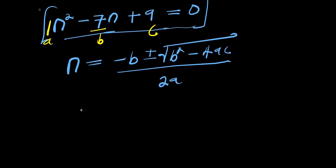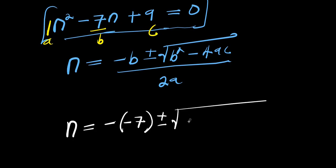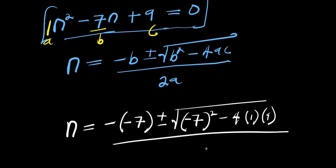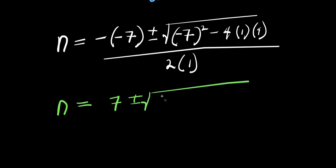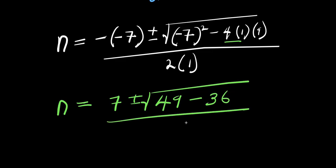We are going to insert these values into the formula. We have n equals negative times negative 7, plus or minus square root of negative 7 squared minus 4 times 1 times 9, divided by 2 times 1. So from here I have n equals 7 plus or minus square root of 49 minus 36, divided by 2.